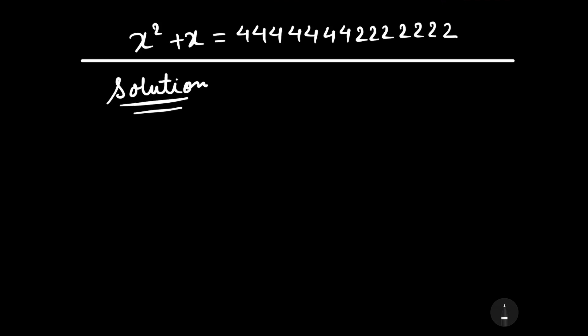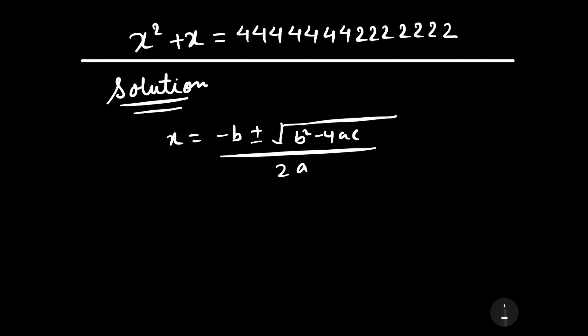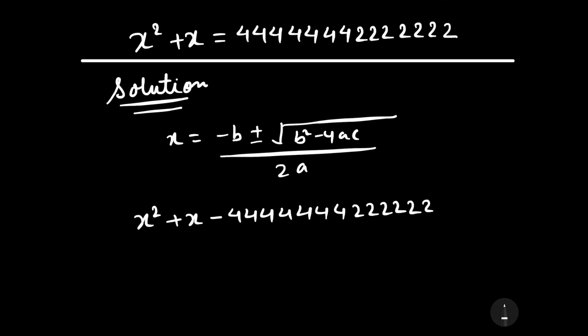If we try to solve this quadratic equation by the Sridharacharya formula — that is, x equals minus b plus or minus the square root of b squared minus 4ac, divided by 2a — then the value of c is very large. If we write this equation in standard quadratic form, it becomes x squared plus x minus 7 to the power 4, and since the value of c is very large, the calculation becomes tedious and difficult.